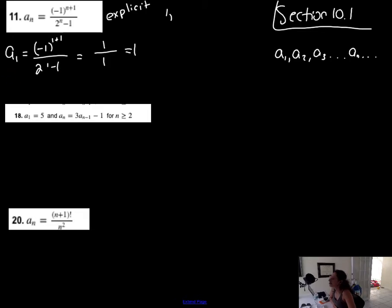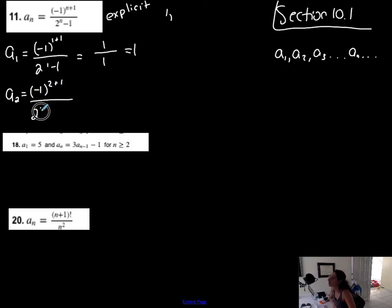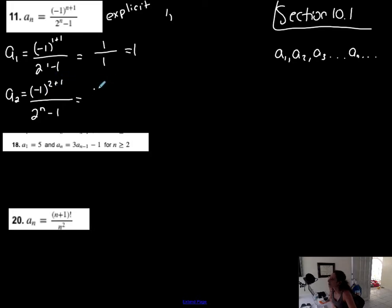To get to the second term, I'm going to replace n with the number two. So everywhere I see an n, I'm going to replace it with the number two, because n represents the term number. Negative one to the third is negative one, over two to the — I'm replacing n with two — two to the second, which is four minus one, which is three. So negative one third is the second term of this particular sequence.